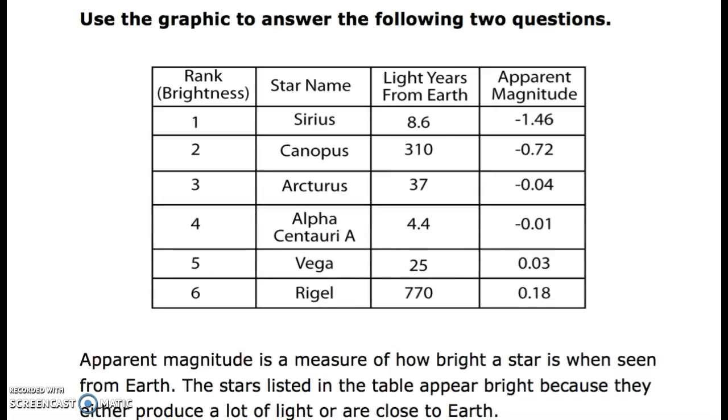Use the graphic to answer the following two questions. Right here is the rank and brightness from 1 to 6. Here's the star name: Sirius, Canopus, Arcturus, Alpha Centauri A, Vega, Rigel. Light years from Earth here, and apparent magnitude here. Apparent magnitude is a measure of how bright a star is when seen from Earth. The stars listed in the table appear bright because they either produce a lot of light or are close to Earth.